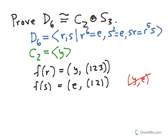Now, again, we've made these choices for a couple of reasons, but one of them is they're going to satisfy the relations. We know that F(R) to the 6th is going to be the identity, because Y, (1, 2, 3) is going to have order 6. And we know that F(S) squared is going to be the identity, because E, (1, 2) squared is equal to the identity. And that tells us that the first two relations are satisfied, but there's still the third relation to check.